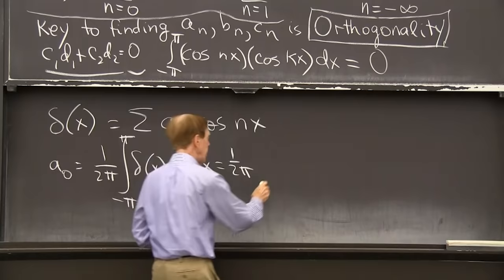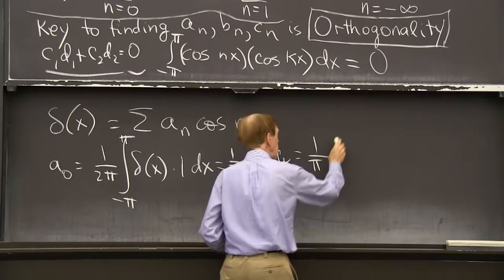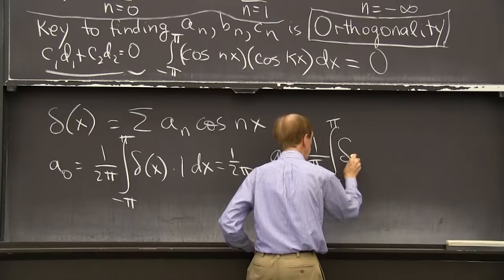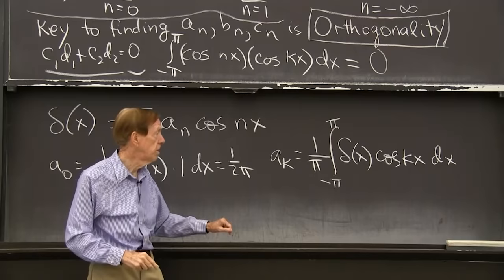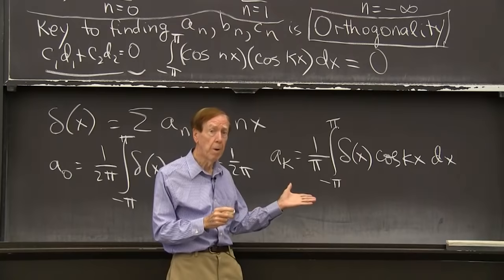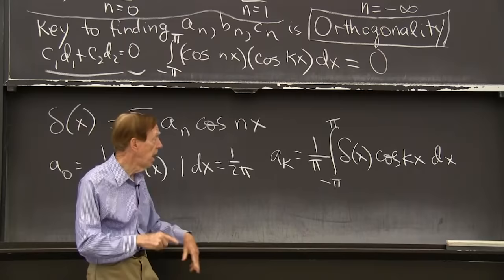The one key thing about the integral of the delta function is it's always 1 if we cross x equals 0, which we will. So that integral is 1, so I'm getting 1 over 2 pi. What about the other Fourier coefficients? So that's 1 over pi now, the integral from minus pi to pi, of the delta of my function times cosine kx dx.